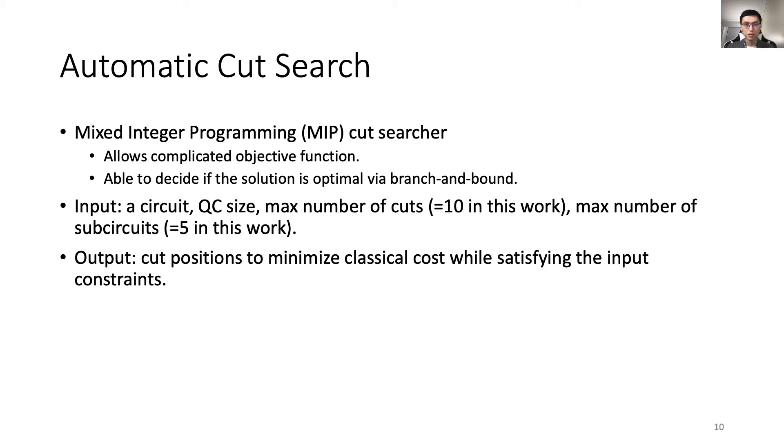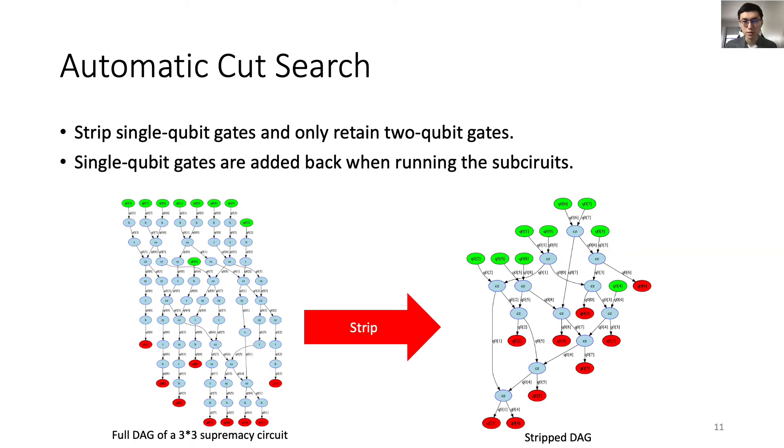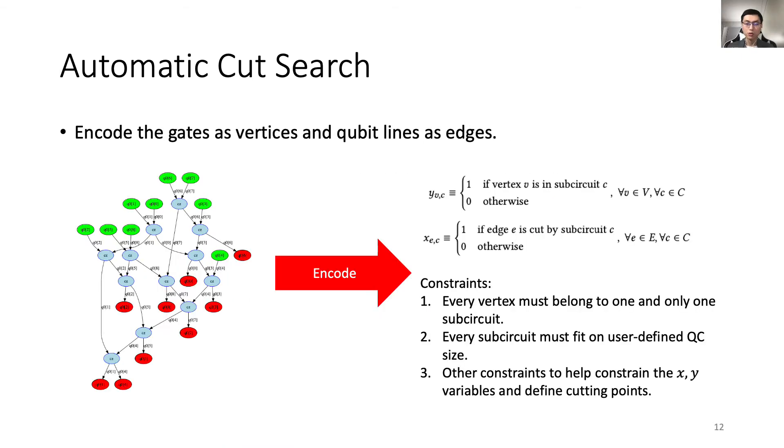The MIP solver first strips all single qubit gates, since they do not affect the circuit connectivity. These are added back when running the sub-circuits. Next, we encode gates as vertices and qubit lines as edges in a graph. We use YVC to indicate if a vertex V is in sub-circuit C, and XEC to indicate if an edge E is cut in sub-circuit C. Couple natural constraints are, every vertex must belong to one and only one sub-circuit, every sub-circuit must fit on the user-defined QC size, and some other constraints to help constrain the X and Y variables and define where the cut points are.